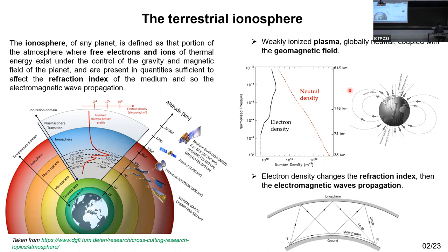Because we have electron density in the ionosphere, this changes the refraction index. This is the way Guglielmo Marconi discovered the ionosphere and used it to propagate signals between two stations about 3,000 km away — not possible with ground waves, but possible through the sky wave because of the existence of the ionosphere.